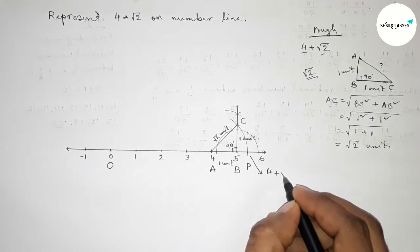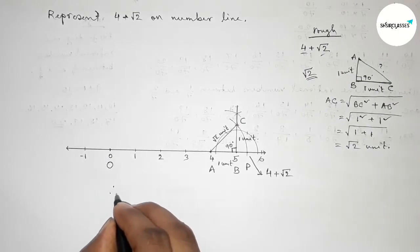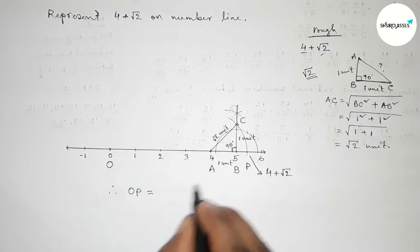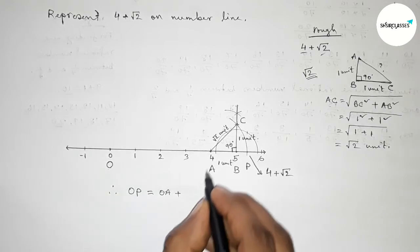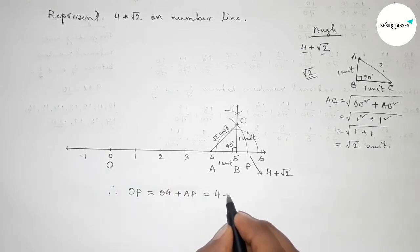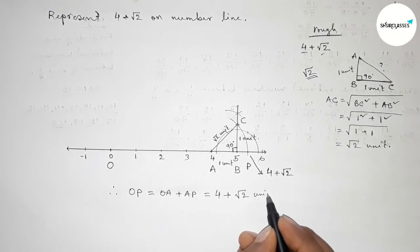Therefore, OP, we can write OP equal to OA plus AP, and OA equals 4 units and AP equals root 2 units.